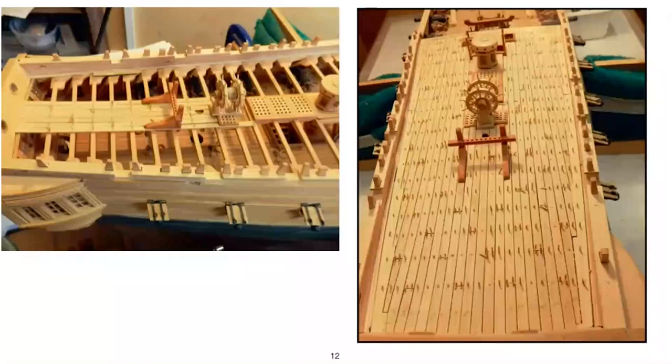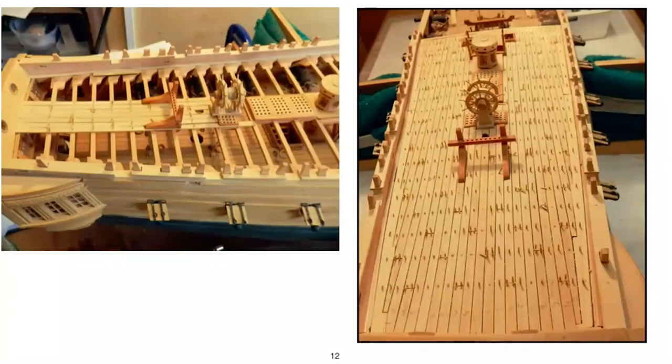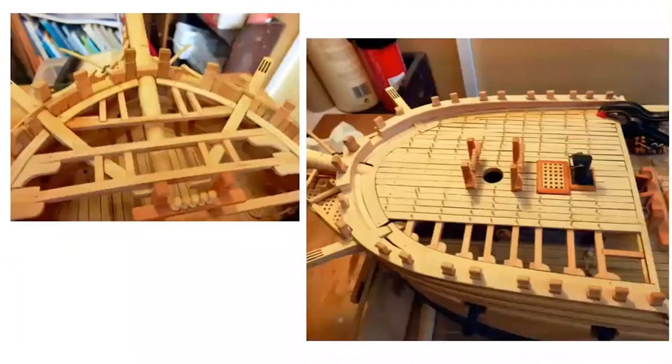In these two slides, the quarter deck planking has just been started on the left, and on the right it's been completed. It's planked with the five butt shift pattern used on all the decks apart from the foc'sle deck. As with all the decks, black paper separates each plank representing caulking and tar. You can also see the tree nails which anchor the planks into the deck beams. Note how these planks butt into the margin plate there.